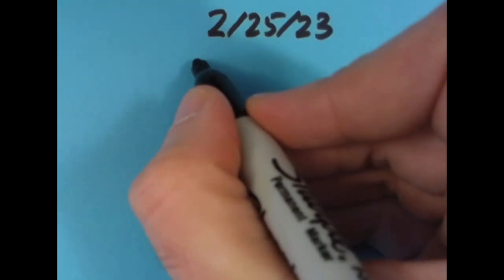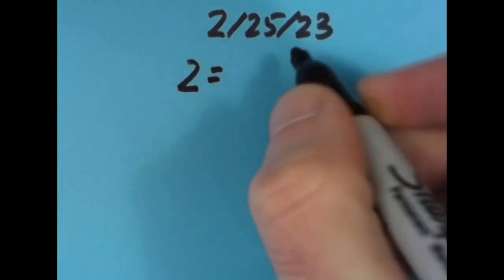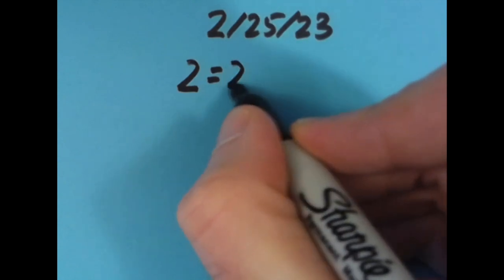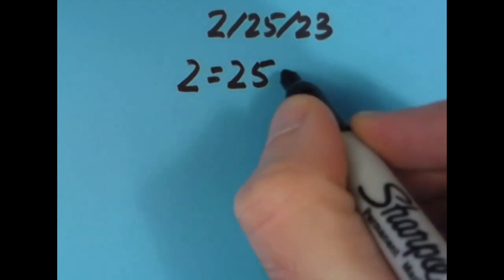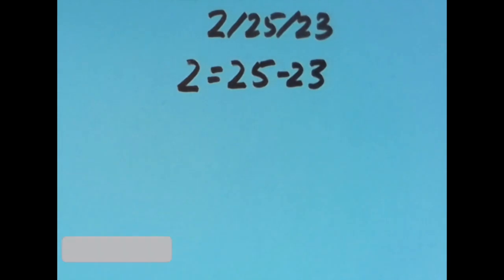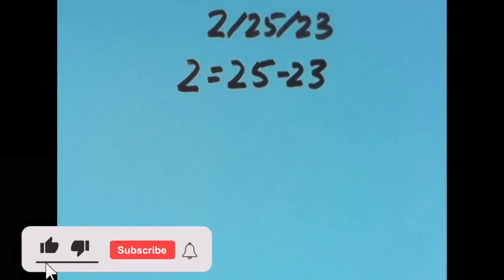What I'd like to do today is to make an equation out of the digits in today's date, and I want to keep those digits in order. For today, I had something really simple, so it was really fun for me. I just said that 2 equals 25 minus 23. Just one symbol that I needed, just that subtraction sign there.